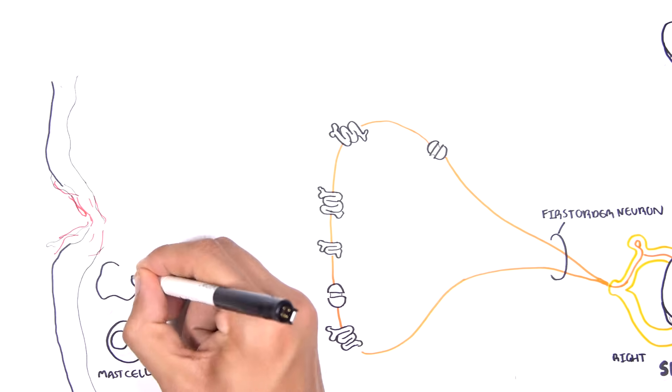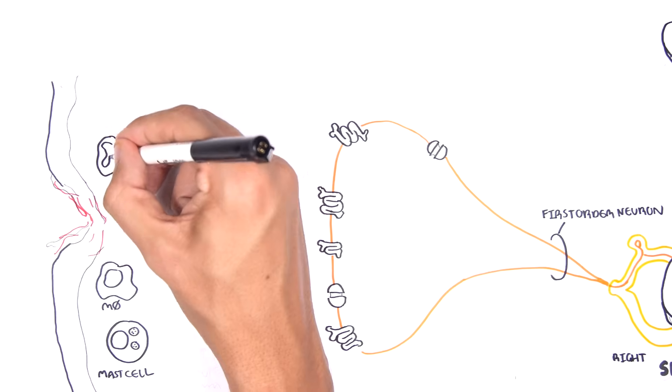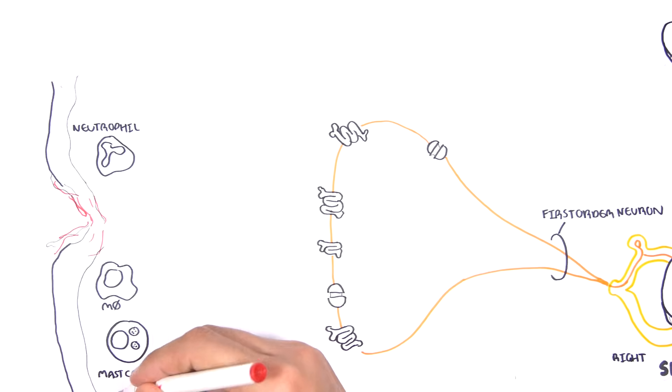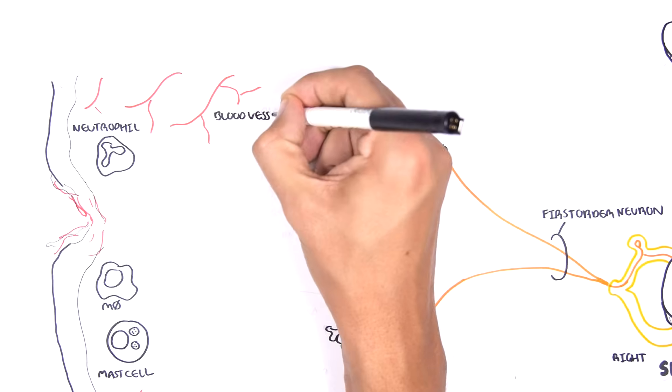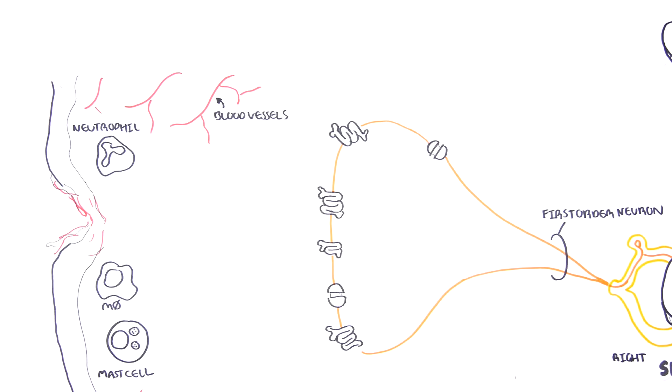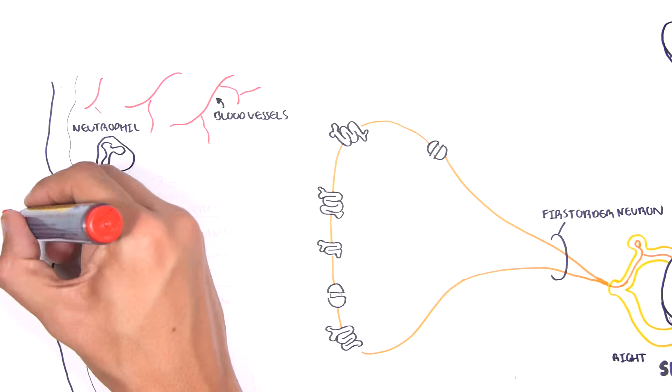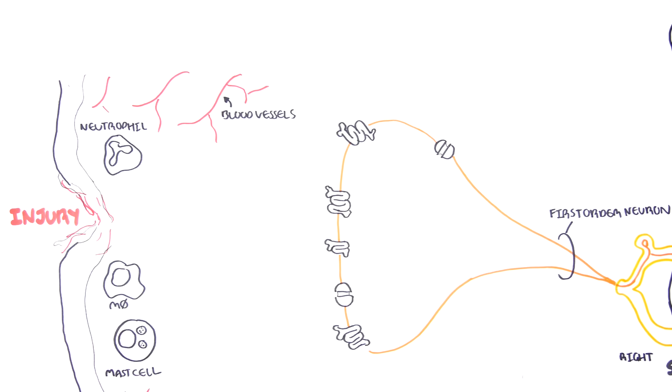Immune cells within the area will get activated and further recruit more immune cells, mounting an inflammatory response. Here you have immune cells such as neutrophils, macrophages, and mast cells. All these cells, as well as the damaged skin cells, will release inflammatory mediators.